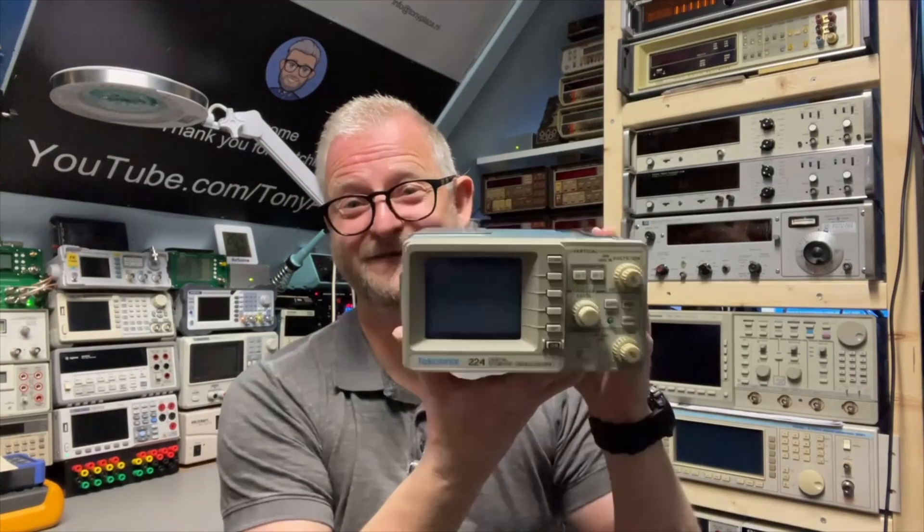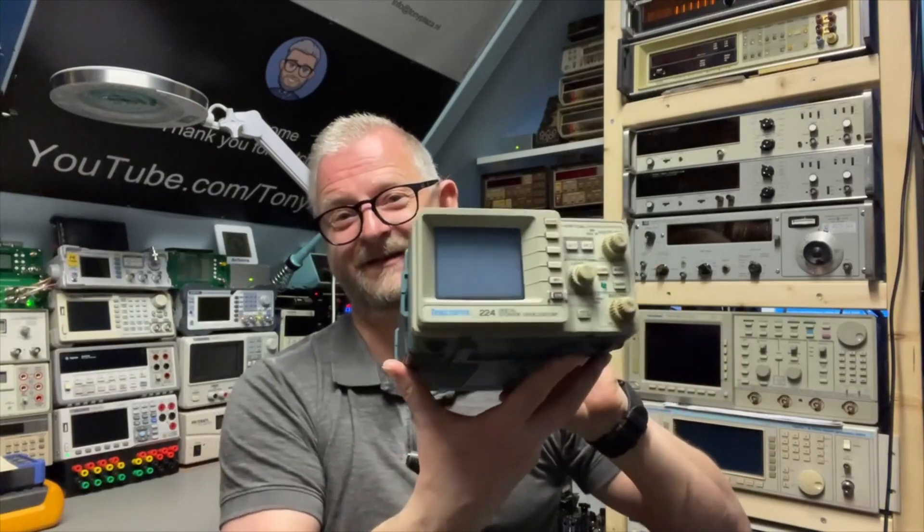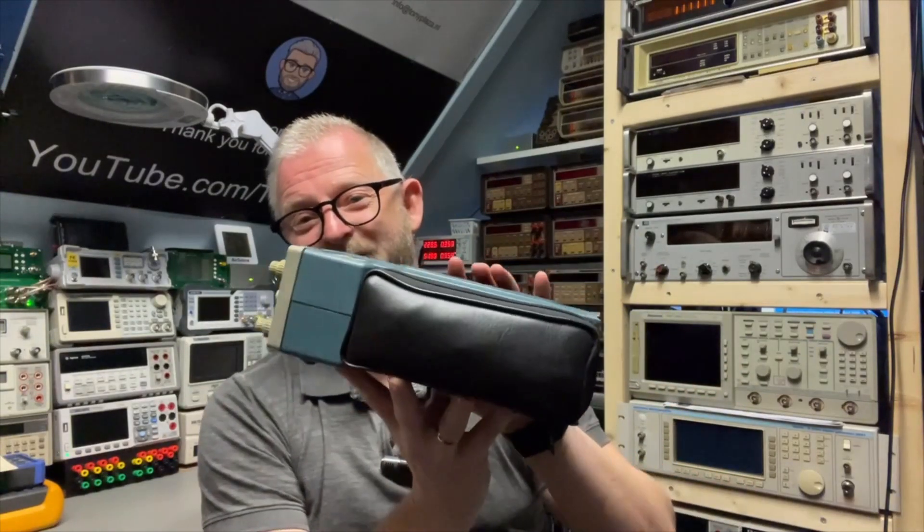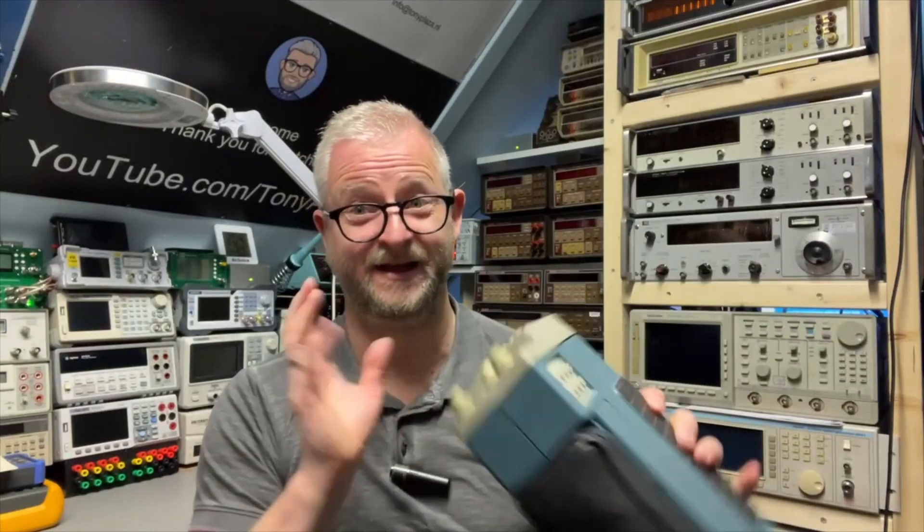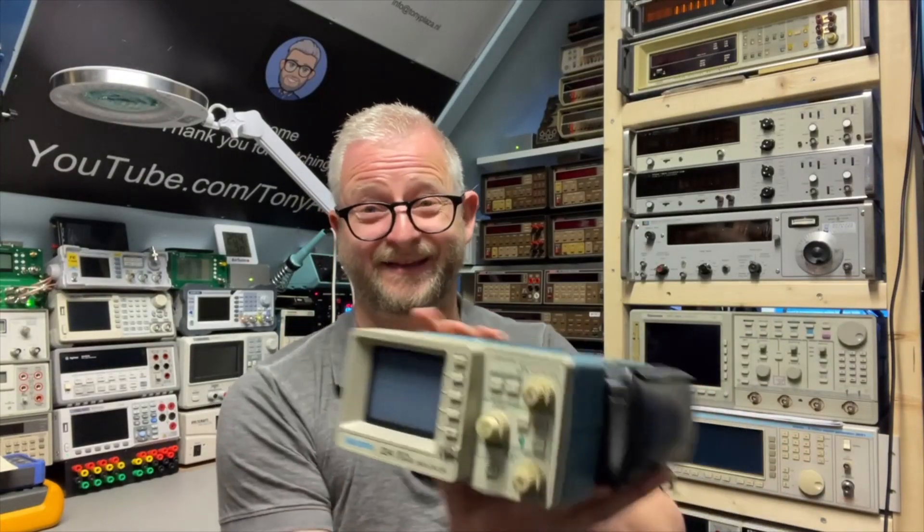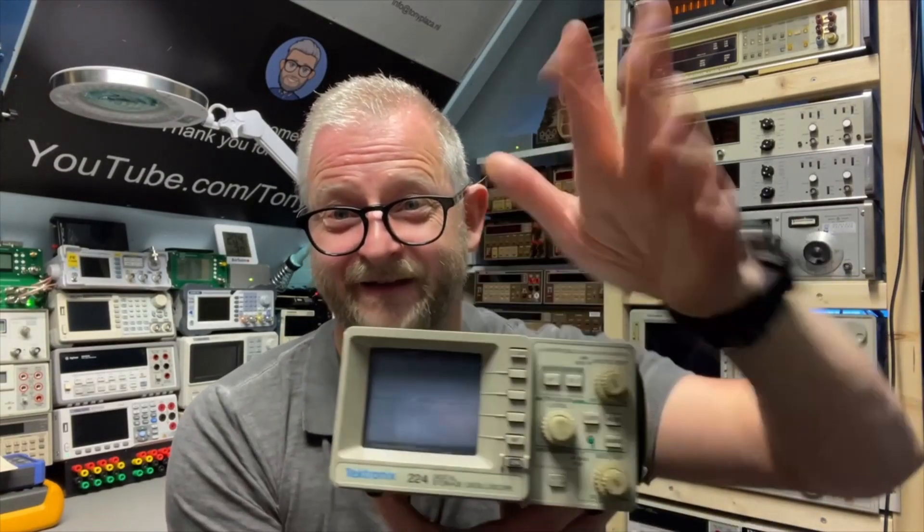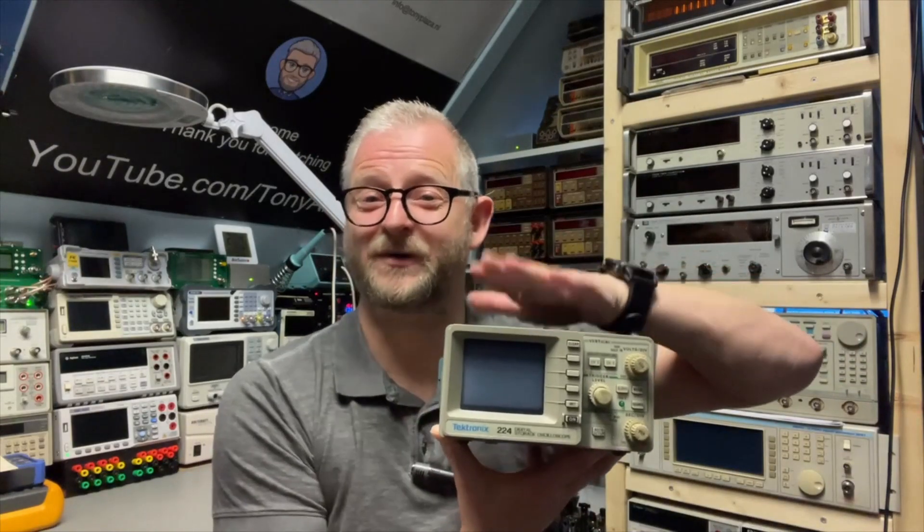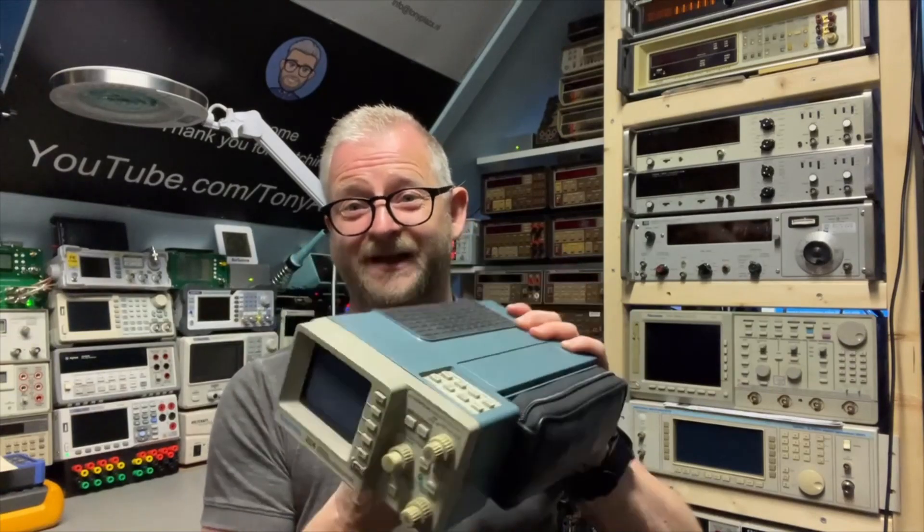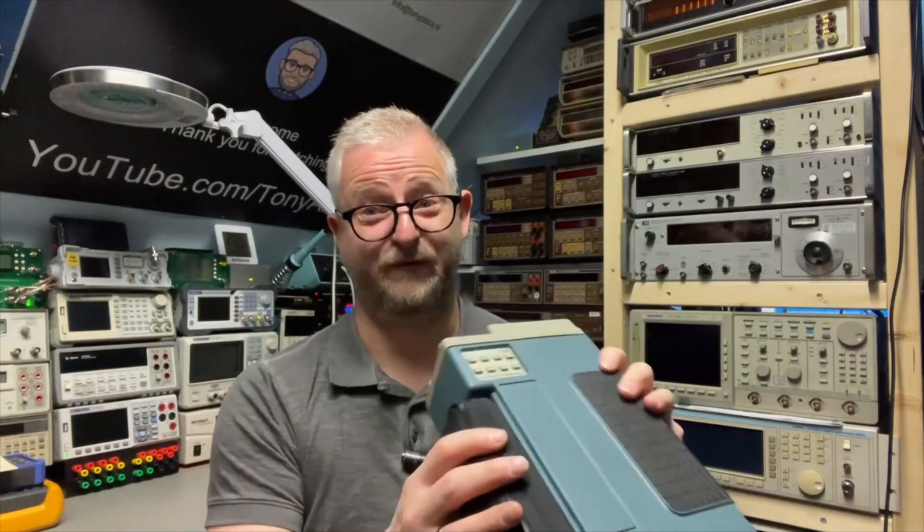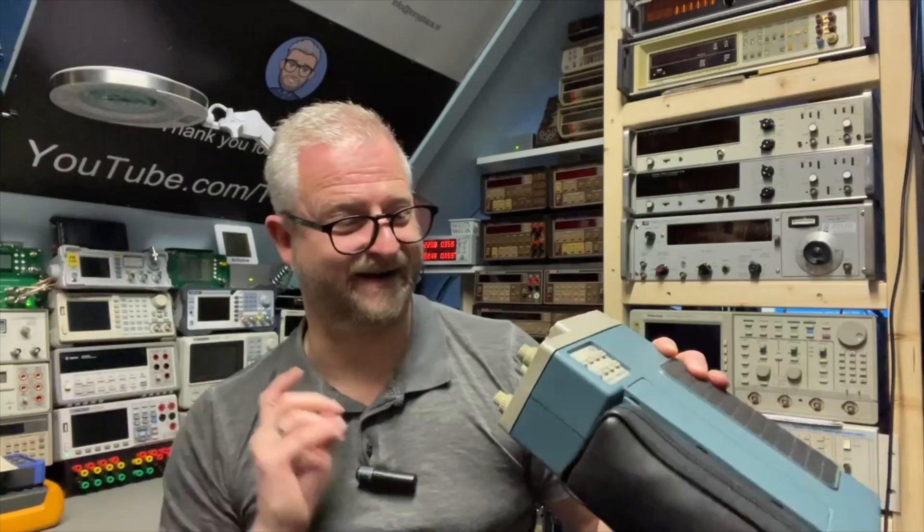So the Tektronix 224. Pretty cool. Small. Maybe you cannot really see the size, but I will compare it to another one. It has two channels completely isolated. So that is good. It has a real tube. So in the end, it is sort of the best of two worlds. And they could really make it compact. And this is the 224. So that means it's two channels, 60 MHz.